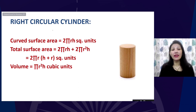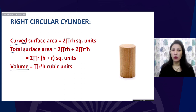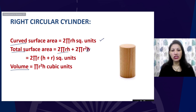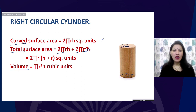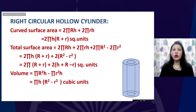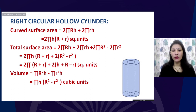For a cylinder, the curved surface area is 2πrh, and the total surface area is 2πrh + 2πr², which includes the area of the upper and lower circles (each πr²). The volume is πr²h. We also discussed the hollow cylinder — its curved surface area formula, total surface area formula, and the formula for calculating the volume.